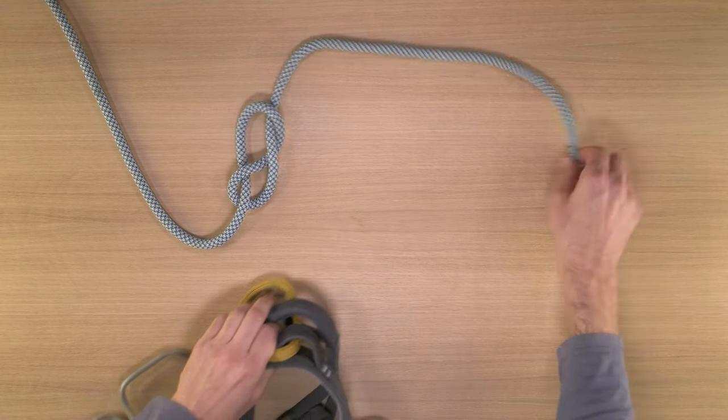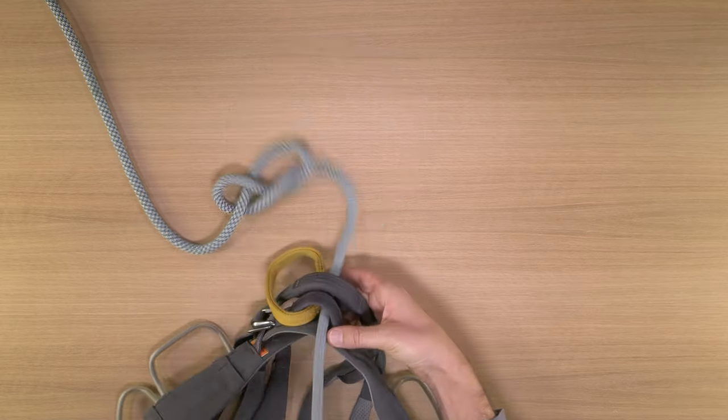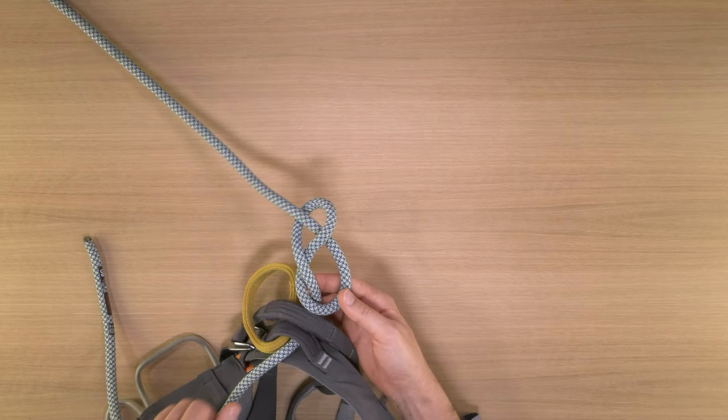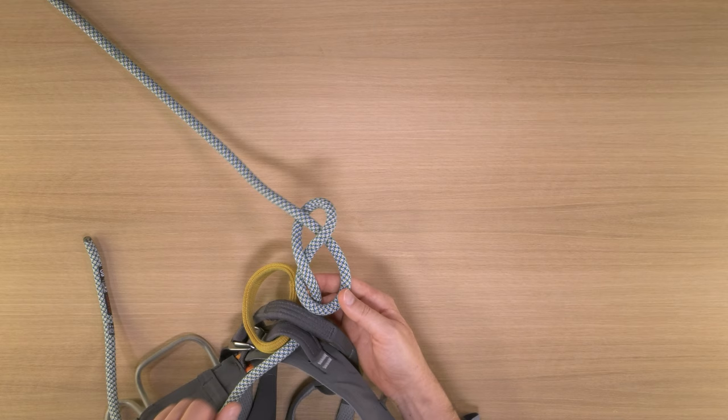Pass the end of the rope through the two hard points, also known as the tie-in points because that's what they're for, and pull the knot right up next to your harness so the finished knot will be just an inch or two above the tie-in points.